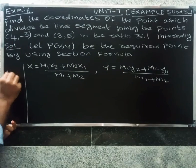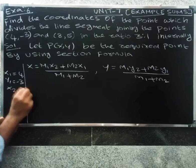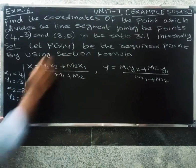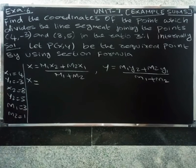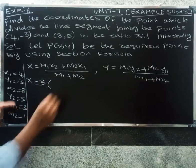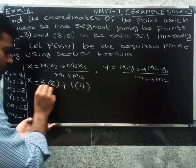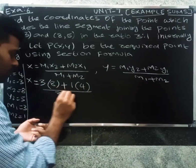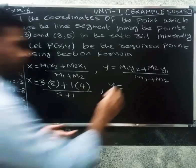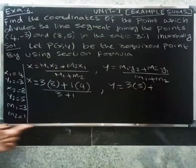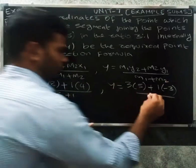So here x1 = 4, y1 = -3, x2 = 8, y2 = 5, and m1 = 3, m2 = 1. Now substituting: x = (m1·x2 + m2·x1) / (m1 + m2), and y = (m1·y2 + m2·y1) / (m1 + m2), so y = (3×5 + 1×(-3)) / (3+1).